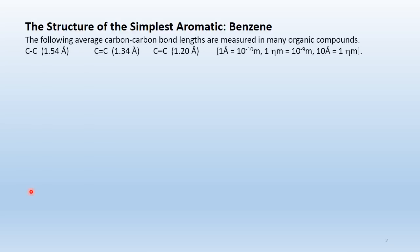Let's start with the structure of the simplest aromatic, benzene. The following average carbon-to-carbon bond lengths are measured in many organic compounds: a carbon-to-carbon single bond is 1.54 angstroms, a carbon-to-carbon double bond is 1.34 angstroms, and a carbon-to-carbon triple bond is shorter still at 1.20 angstroms.